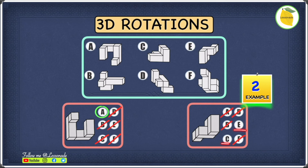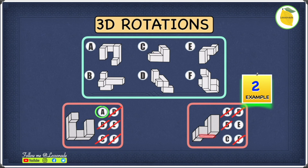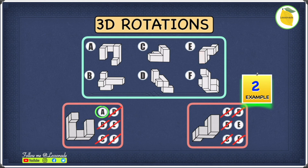Looking at C, both cuboids are next to each other. But in the actual 3D figure, one cuboid is stacked on top of the other — this cuboid is stacked on top of this cuboid. In C, they are just next to each other and not stacked, so we cross out C. We are left with E. In E, both cuboids are stacked on top of each other — the lower cuboid is underneath the upper one. So our answer to this question is E.